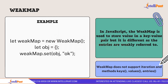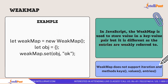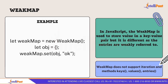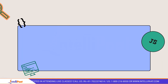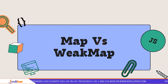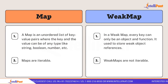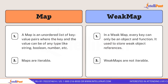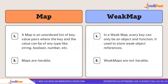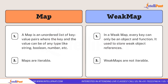When using WeakMap, there are no methods to iterate through it. There are some supported methods and some things it doesn't support — we'll talk about that later. Now let's understand the differences between Map and WeakMap. Map is basically an unordered list where you can store any kind of data such as strings, booleans, numbers, etc.